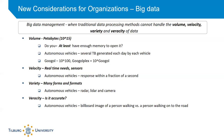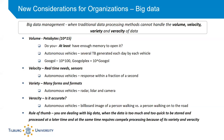The last V is veracity — basically, you're trying to understand whether the data you're receiving is actually accurate. Take the example of autonomous vehicles: the data from its camera could be a billboard image of a person walking or a real person walking on the road, and the vehicle must figure out which of the two it is. As a rule of thumb, you are dealing with big data when the data is so large and coming so quickly that it cannot be stored and processed later, and at the same time requires complex processing because of its variety and veracity.